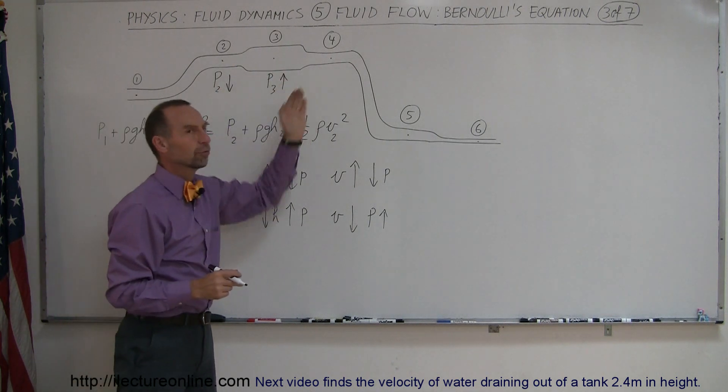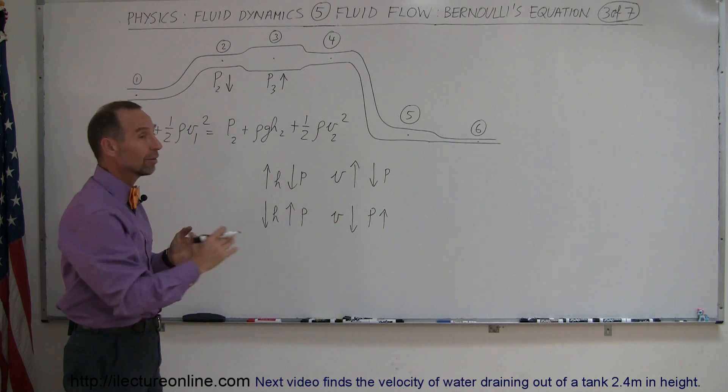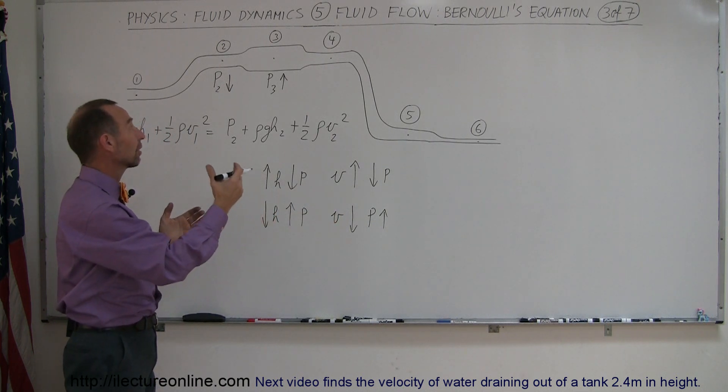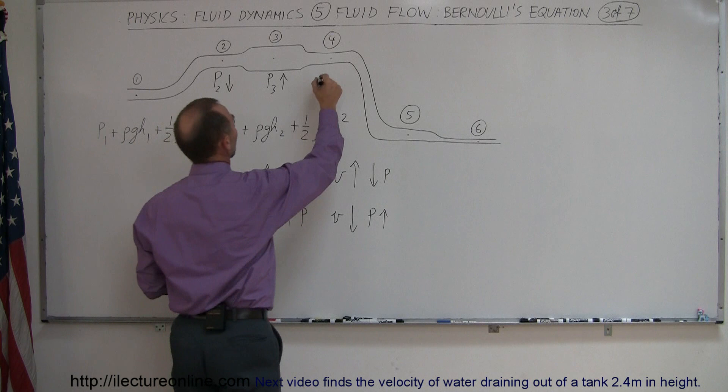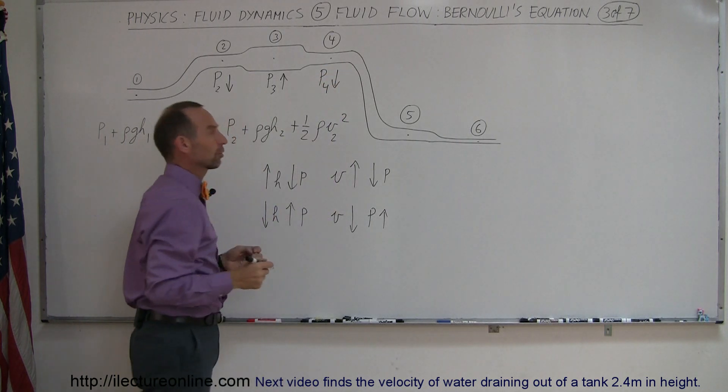Now we go from point 3 to point 4. The pipe narrows, that means the velocity has to increase. If the velocity increases, then pressure will go down. So at point 4, pressure goes down in relationship to point 3.